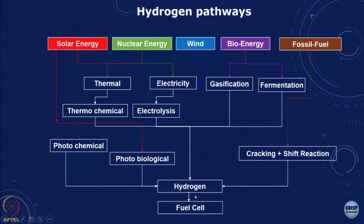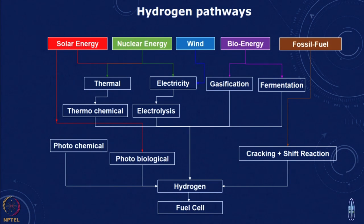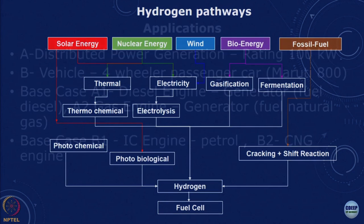After obtaining hydrogen, it can be used in a fuel cell to generate electricity. Fuel cells are compact, have no emissions, no moving parts, and offer high efficiency. Unfortunately, they are still very costly and have relatively low operational life, which is why fuel cell hydrogen has not become as widespread as once expected.